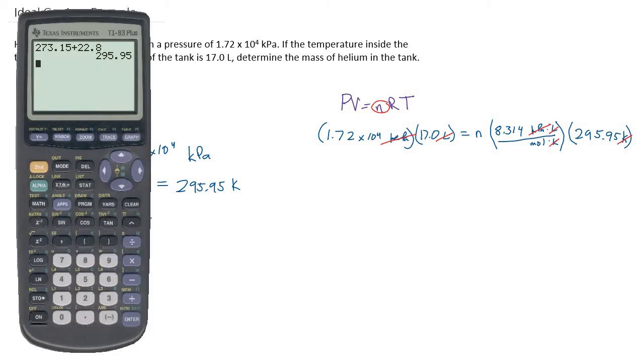Alright, so let's do our calculation here. On the left side of our equation we have 1.72 times 10 to the 4th times 17.0 liters. So that is 292,400. Since I've already cancelled out my units, I'm not going to write units beside this right now.